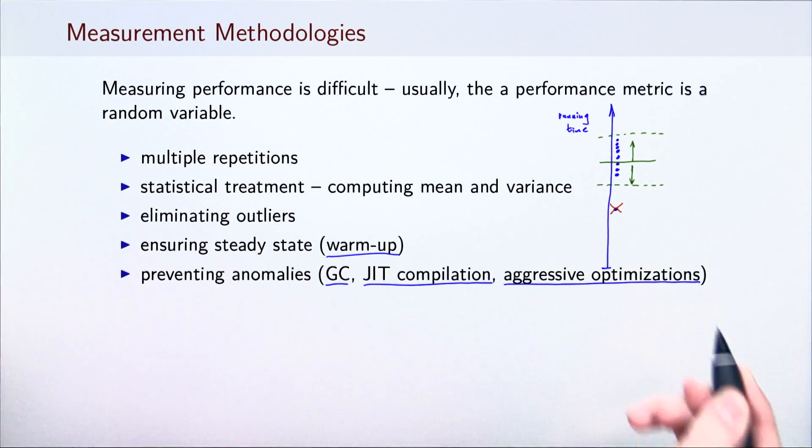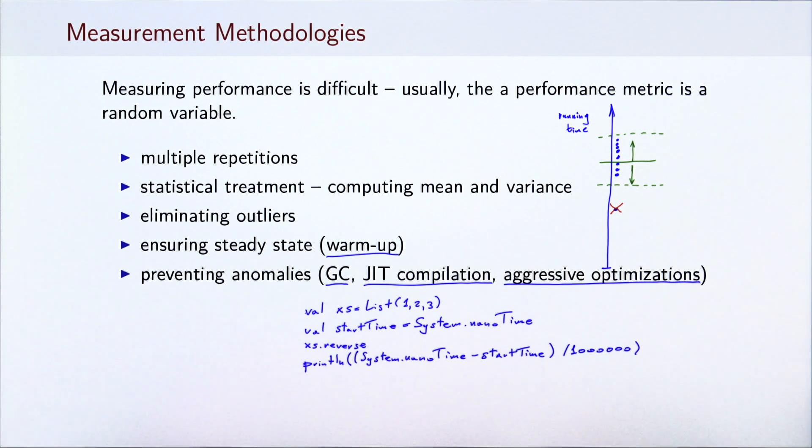If we turn back to our earlier example, we can see that we neglected to do most of these steps. First of all, we did not repeat the benchmark multiple times, we only ran it once. Then, we did not eliminate outliers nor did we prevent various anomalies, or ensure that the program is in a steady state before doing the measurement. One other problem is that this benchmark is so short for this particular list, that the output will be very noisy.